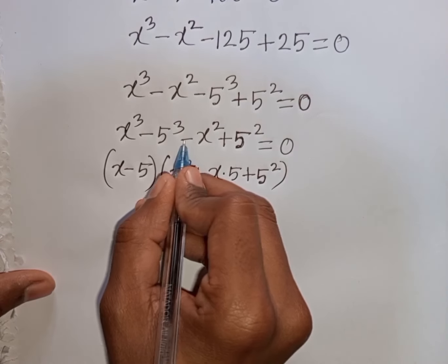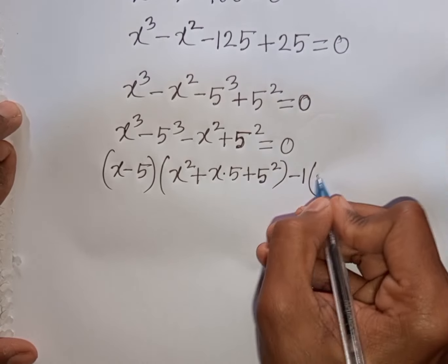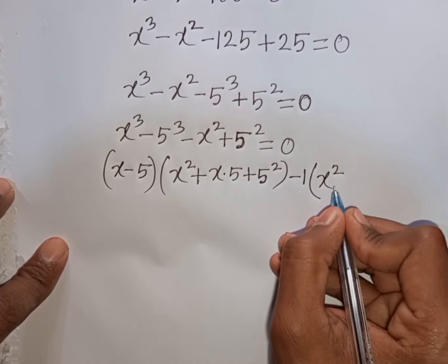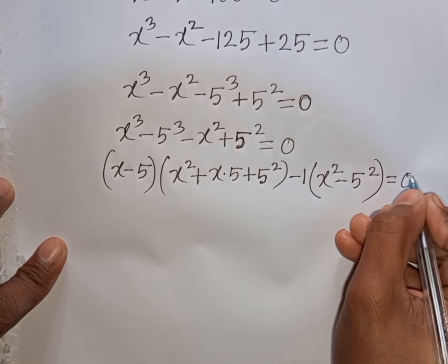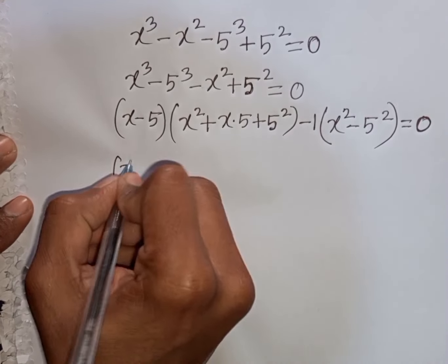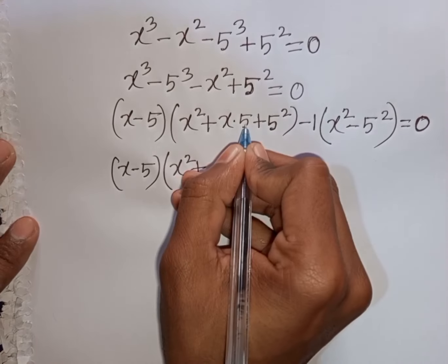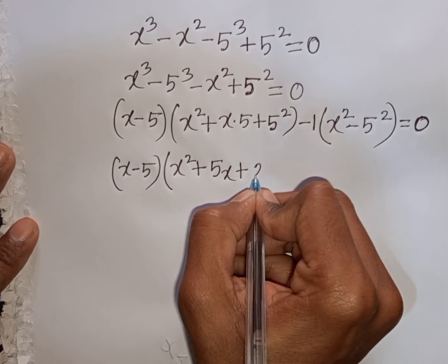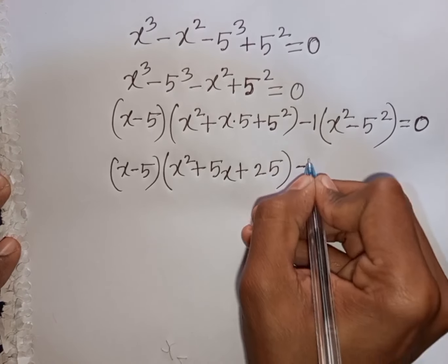Then from here I take common minus 1, so minus 1 is out of the bracket. This divided by this — that means it will be x squared, then plus 5 squared divided by minus 1, that means minus 5 squared. Then bracket close, equal to 0. So we have bracket x minus 5 times x squared plus 5x plus 25, bracket close, equal to 0.